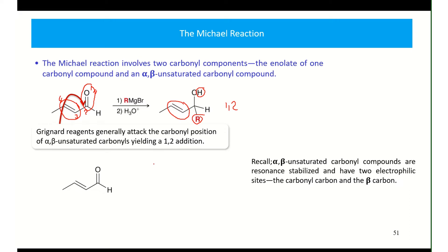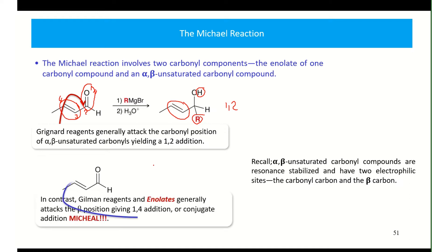On the other hand, if we have a Michael attack — say, for example, a Gilman reagent — we end up with a species which has lost a degree of unsaturation. But why is it called 1-4? Well, for that we have to take a closer look.